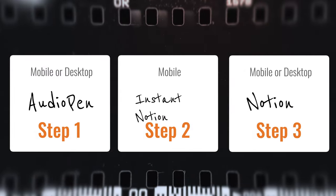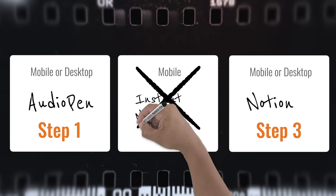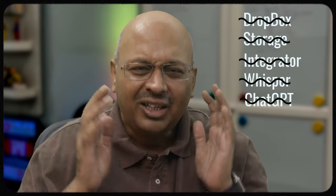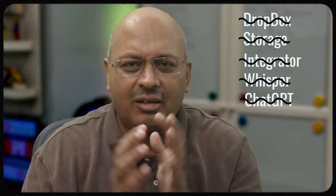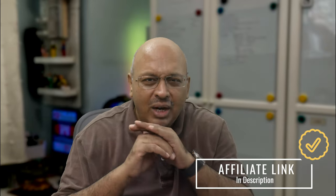On the desktop, you can skip step two altogether. By cutting out multiple systems, you don't have to pay for Dropbox, storage, an integrator, Whisper, or ChatGPT, and you don't have to keep making changes when integrations change. All you pay for is Audio Pen, which is on early bird pricing. I love Audio Pen for what it does, and I also have an affiliate link — if you use it, it comes at no additional cost to you, but gives me a little incentive.